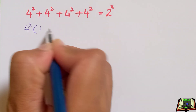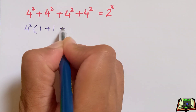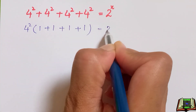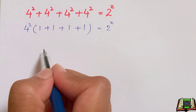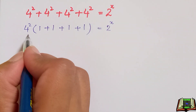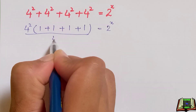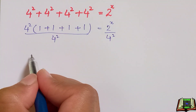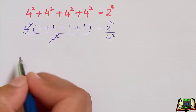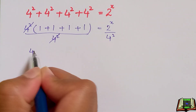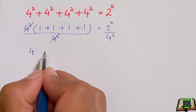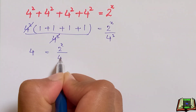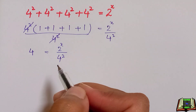In the first method, we are going to take 4 raised to power 2 as common, so inside the parenthesis we have 1 plus 1 plus 1 plus 1, which equals 2 raised to power x. Here we are going to divide both sides by 4 raised to power 2, so the 4 raised to power 2 cancels. We have 1 plus 1 plus 1 plus 1 equals 4, equal to 2 raised to power x over 4 raised to power 2.